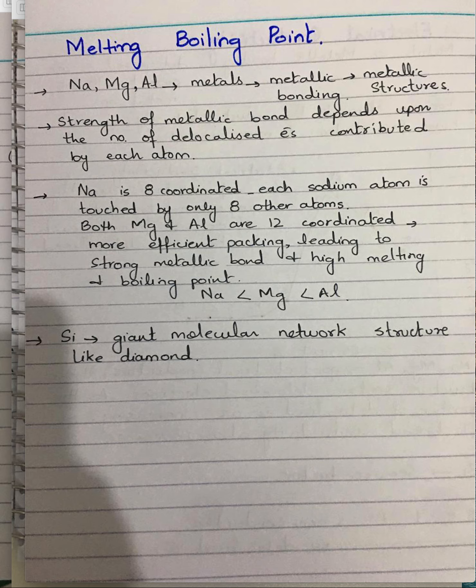In the case of magnesium, there are two electrons per atom, and in the case of aluminium there are three electrons per atom. So the number of electrons which each atom can contribute to the delocalized sea of electrons increases from sodium to aluminium. The atoms also get smaller, and as a result the bonding becomes stronger, so the melting and boiling point increases.